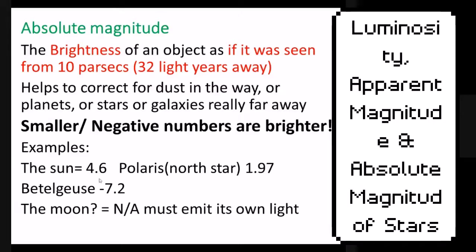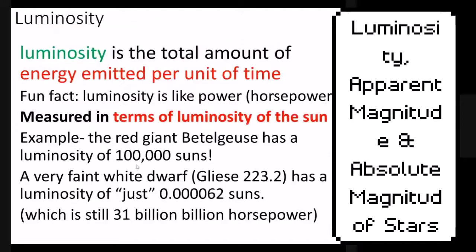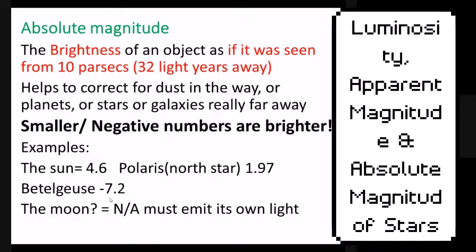For example, the sun is actually not that bright — it gets a positive 4.6 value. The North Star, which is about 400 times brighter, has a value of about 2. Betelgeuse, which is 100,000 times brighter than the sun, has a value of negative 7.2. So you can see: negative number means more bright, positive number means less bright.